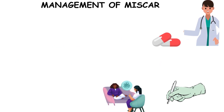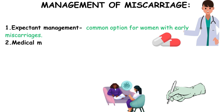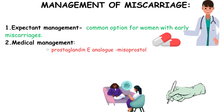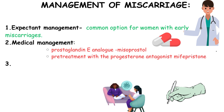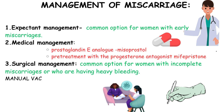When it comes to managing a miscarriage, there are typically three main options available. Expectant management is a common choice for women experiencing early miscarriages, where they let the miscarriage progress naturally without intervention. Medical management involves using medications like misoprostol, a prostaglandin-E analog, particularly if the pregnancy has progressed beyond nine weeks; sometimes pretreatment with the progesterone antagonist mifepristone is used. Surgical management may be necessary for cases of incomplete miscarriage or heavy bleeding, with procedures like manual vacuum aspiration under local or general anesthesia commonly performed.